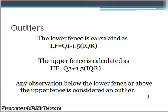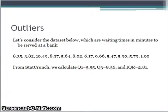We determine what's an outlier by looking at any observation in the data set that's below the lower fence or above the upper fence. If we look at this example, these are waiting times at a bank in order to be served. So the first person had to wait 8.35 minutes, the second person waited 3.82, et cetera. From StatCrunch, we're going to get Q1 is 5.55, Q3 is 8.36, and the interquartile range, we just do Q3 minus Q1 is 2.81.